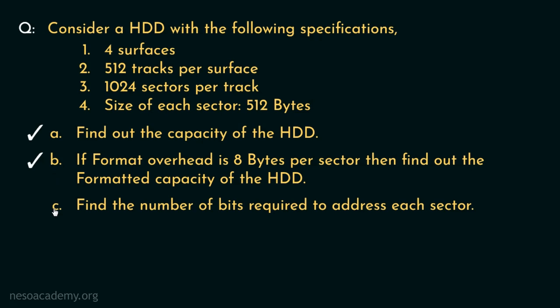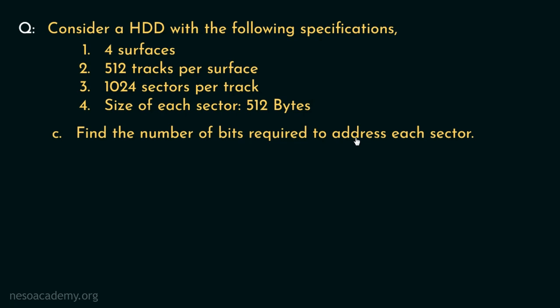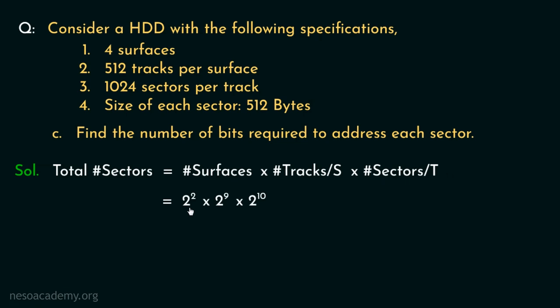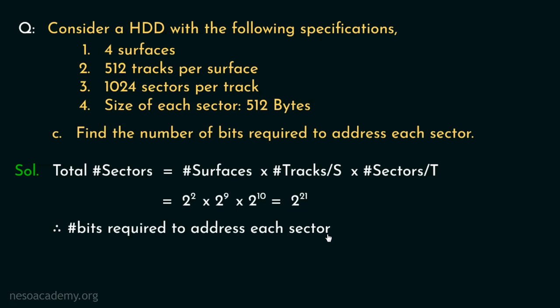Let's solve the next one: find the number of bits required to address each sector. We already know the total number of sectors: 2² × 2⁹ × 2¹⁰ = 2²¹. So the number of bits required to address each sector is log₂(2²¹) = 21. Using 21 bits, we can address each and every sector across all the surfaces.